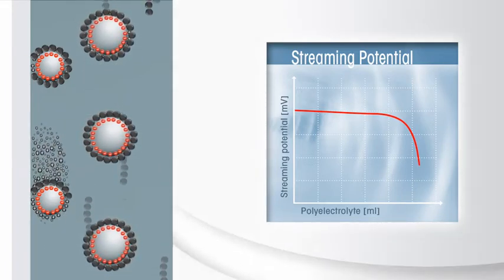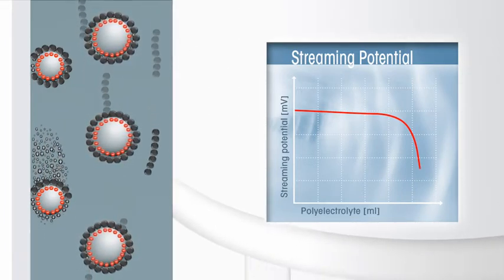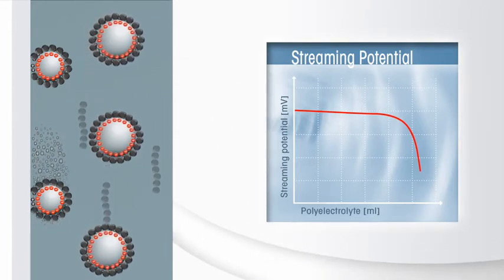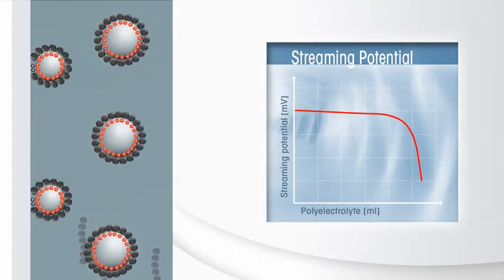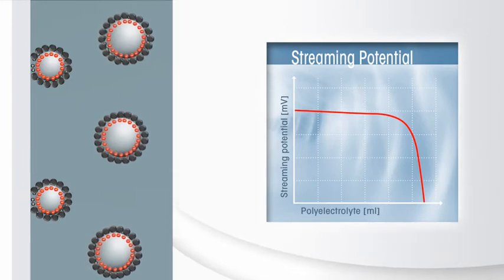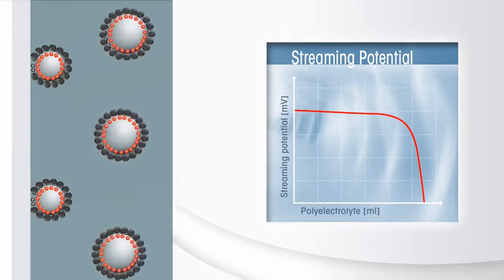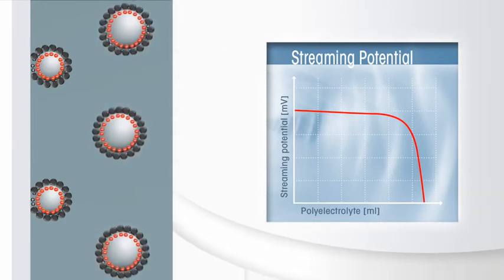When all the sample charge is neutralized, the measured streaming potential is zero millivolt. Since the charge concentration of the titrant is known, the charge content of the sample can be calculated from the titrant consumption.